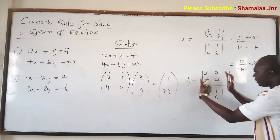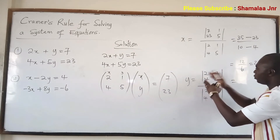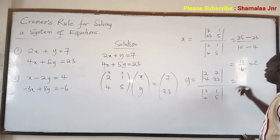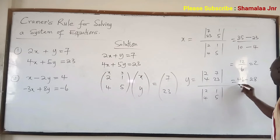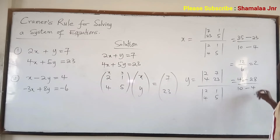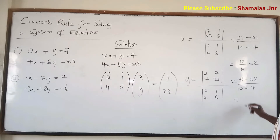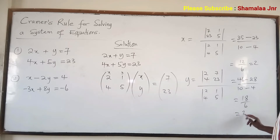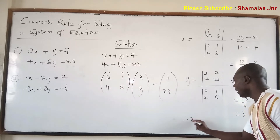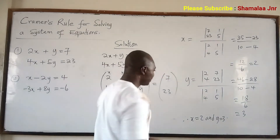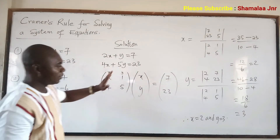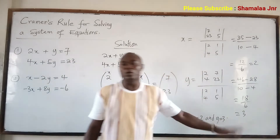You find the determinant of the matrix 2, 7, 4, 23. That is 23 times 2 equals 46, minus 4 times 7 equals 28, over 5 times 2 equals 10, minus 4 times 1 which is 4. This equals 46 minus 28 is 18, over 10 minus 4 is 6. So y equals 18 over 6, which is 3. Therefore x equals 2 and y equals 3. The solution to this system of equations is x equals 2 and y equals 3. It is not difficult at all.